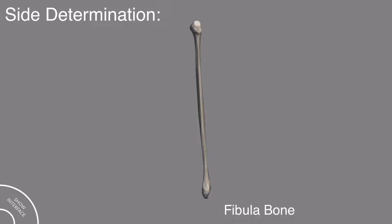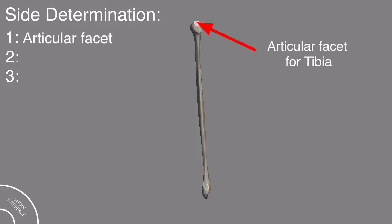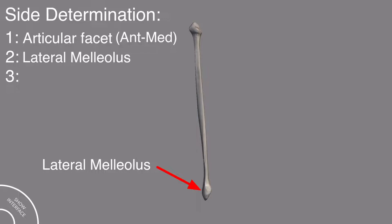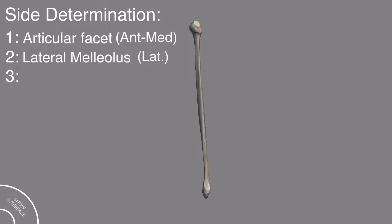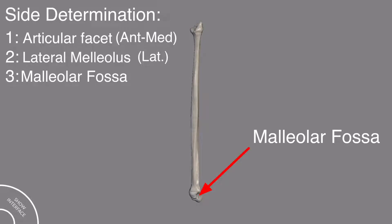For side determination you have to remember three important points. First, in the proximal end the articular facet for the tibia bone should be in the anterior and medial position. Second, the lateral malleolus should be on the lateral side. Third, and most importantly, in the distal end this is the malleolar fossa.